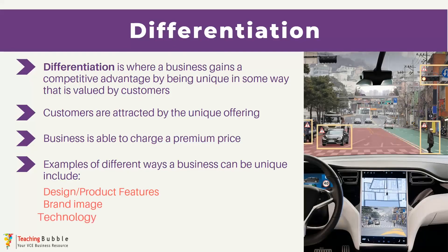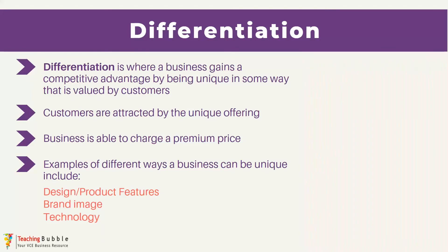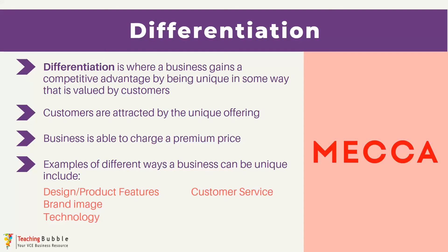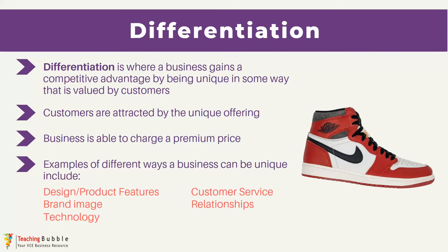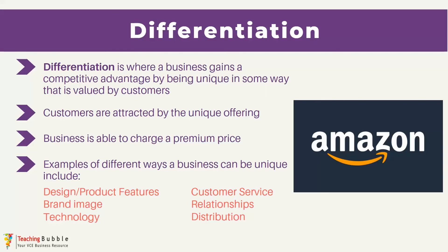Businesses can be unique with the technology they offer, like Tesla's technology in their cars, which gives them a competitive advantage against other car manufacturers. They can stand out with their customer service, like Mecca Cosmetica. It could be the relationships they have, like Nike's relationship with Michael Jordan and the incredible success the Jordan brand has had for Nike. Or it could be their distribution, like Amazon's incredible distribution network across the world.